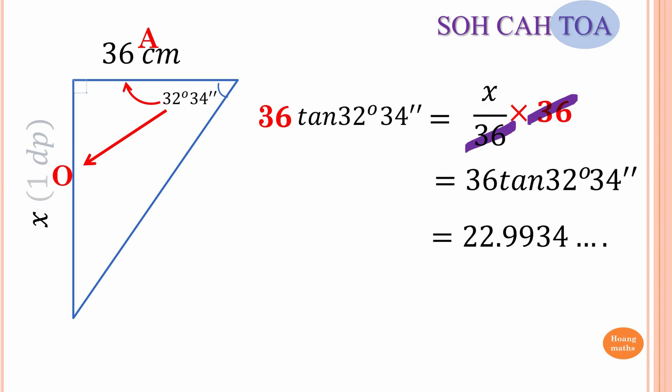Rounding to one decimal place: we have 22.9934, so we write up to 22.9. But we look at the digit after 9, which is 9 — more than halfway — so we add 1. Nine plus one is ten, so we carry over and the answer is 23.0 centimeters. Thank you so much for watching.